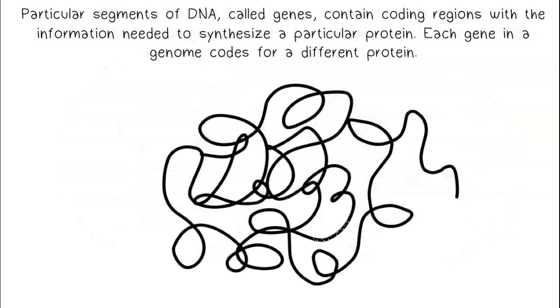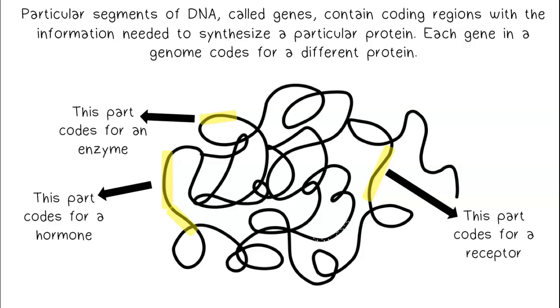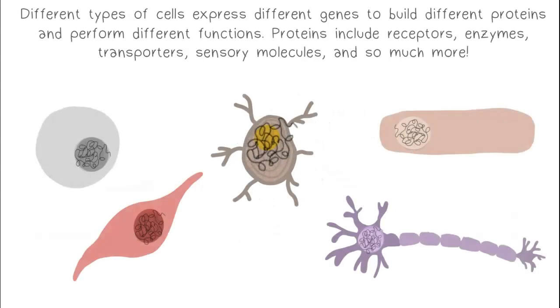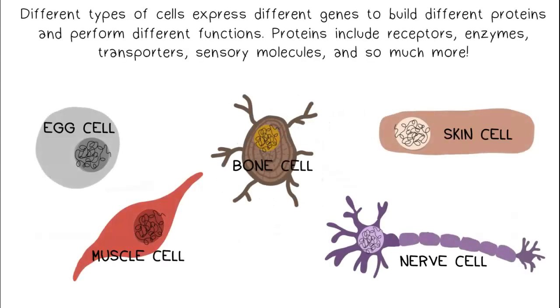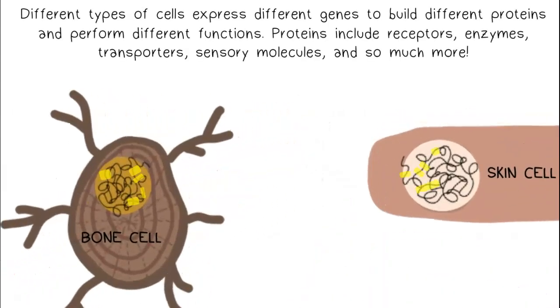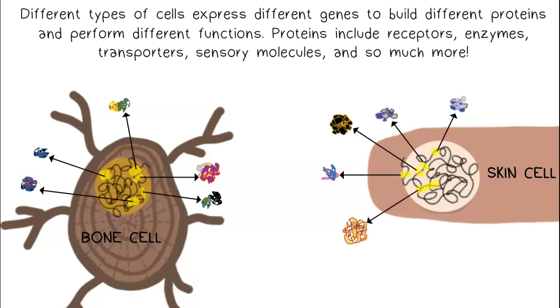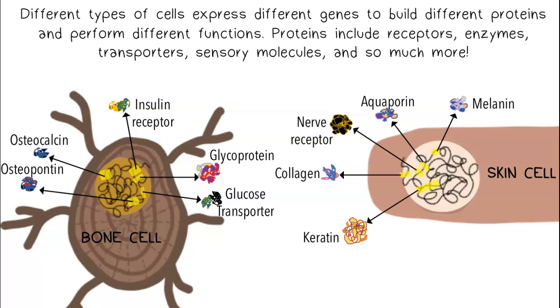Particular segments of DNA, called genes, contain coding regions with the information needed to synthesize a particular protein. Each gene in a genome codes for a different protein. Different types of cells express different genes to build different proteins and perform different functions. Proteins include receptors, enzymes, transporters, sensory molecules, and so much more.